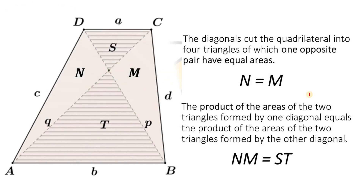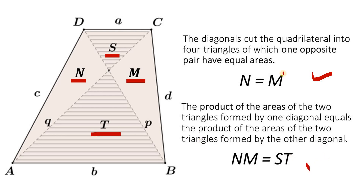To answer this, we will use two concepts. We have a trapezoid cut by diagonals AC and BD. The first concept is that a diagonal cuts a quadrilateral into four triangles, of which one opposite pair have equal areas — in this case, N and M have equal areas. The second concept is that the product of the areas of two triangles formed by one diagonal equals the product of the areas of two triangles formed by the other diagonal — that is, N times M equals S times T.